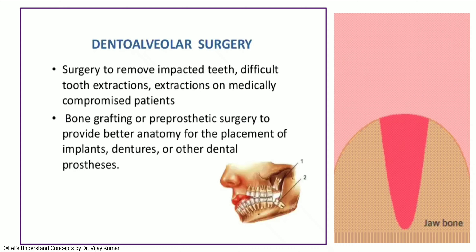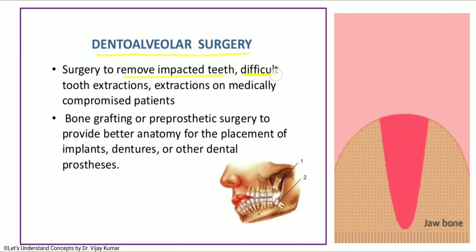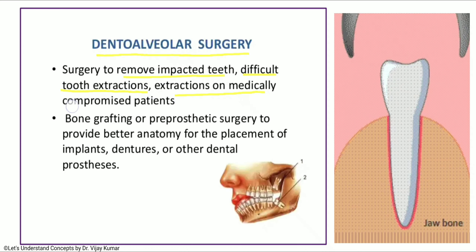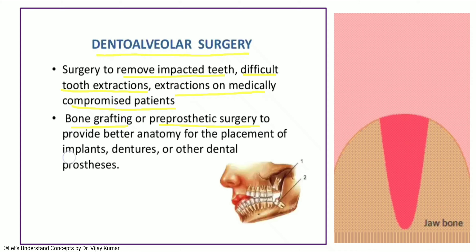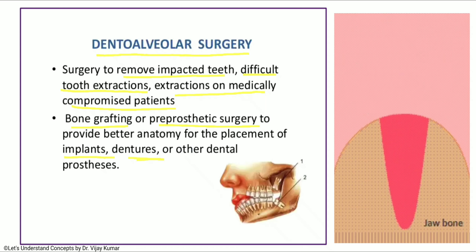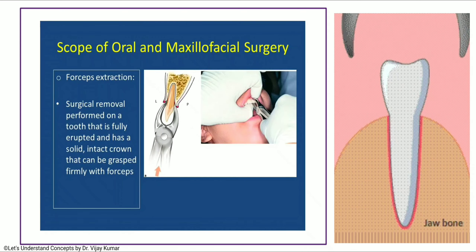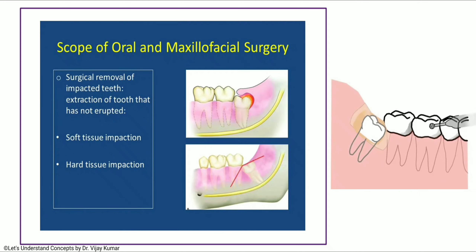In dento-alveolar surgery, you will deal with how to remove impacted teeth, difficult tooth extractions, extractions on medically compromised patients, bone grafting, pre-prosthetic surgery, placement of implants, and implant-supported complete dentures. Forceps extraction is surgical removal performed on a tooth which is fully erupted and has a solid intact crown that can be grasped firmly with a forceps. Surgical extraction, also known as open or trans-alveolar approach, involves cutting the bone to take out the tooth or root portion.